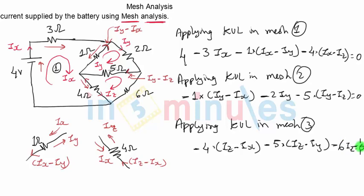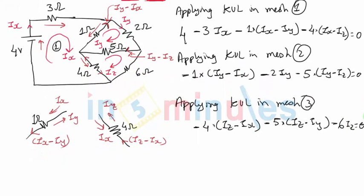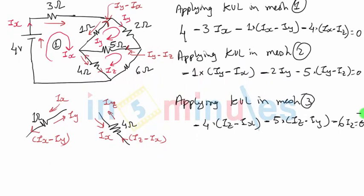We have written equations in all three loops, but we will need to simplify the equations in the form of IX, IY, and IZ. And then we'll have to solve them simultaneously.